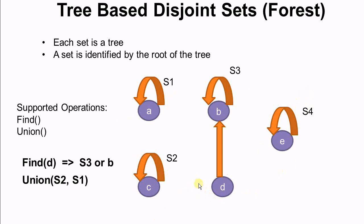In tree-based disjoint sets, each set is a tree and each item has a pointer that points to another item. A set is identified by the root of the tree. The root of S3 is B, the root of S1 is A, and the root of S2 is C. The root has a unique attribute: its pointer points to itself. When we call find(D), we find the parent of D, which is B, and B represents S3, so we have found that the disjoint set of D is S3.